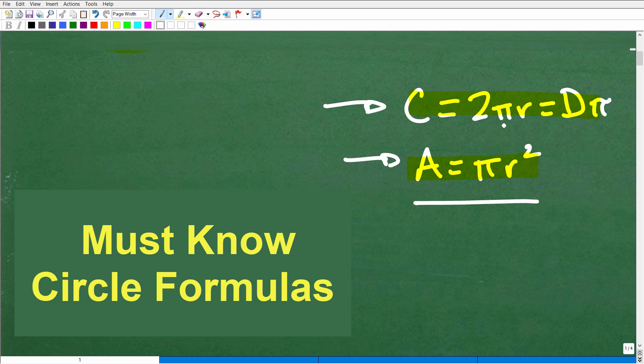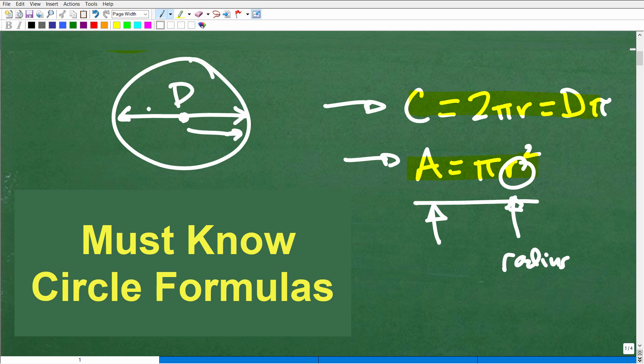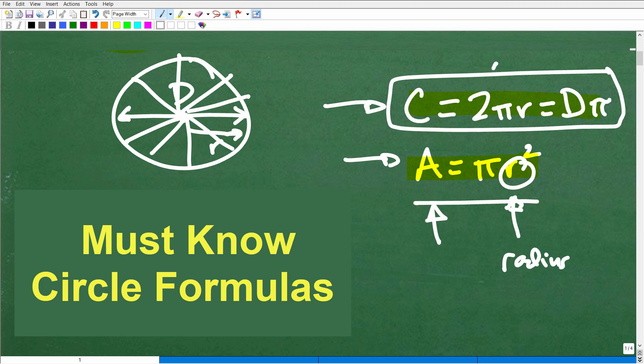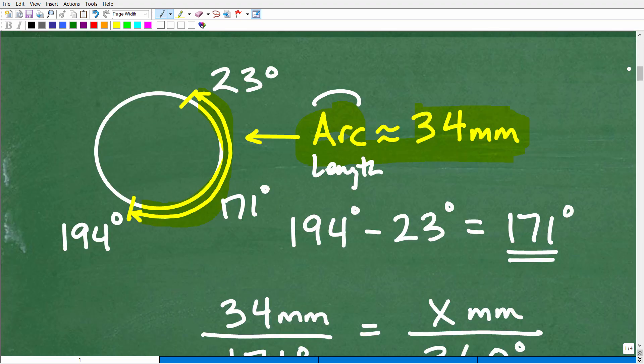We know from here to here, we know that length. But if we knew the entire length around the circle, that would in fact be the circumference. We can actually do this by setting up a nice, lovely proportion.